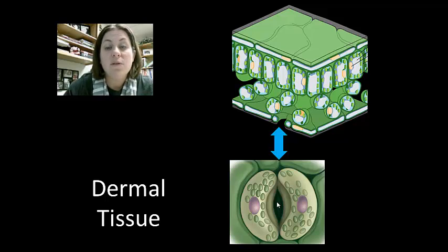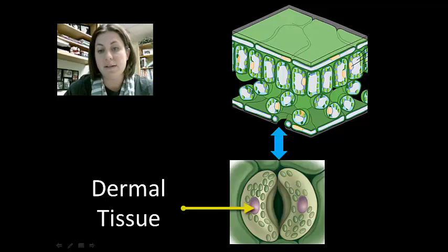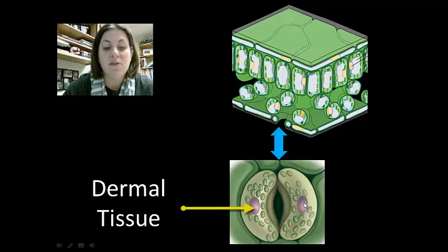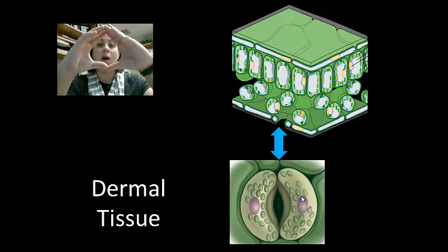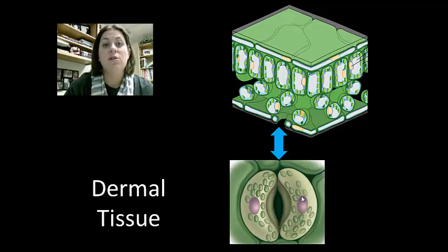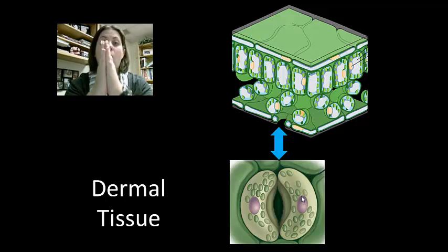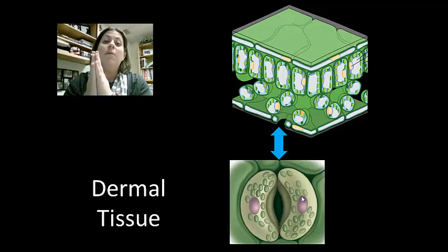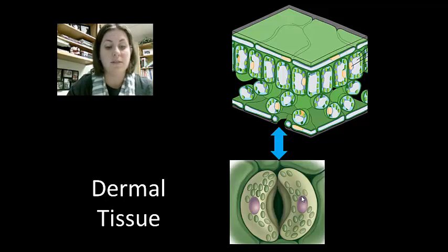We don't want the stomata to be open all the time. Modified dermal cells called guard cells line the stomata. When the plant has plenty of water and needs carbon dioxide, the guard cells are open. However, if the plant is losing too much water, the guard cells close the hole, stopping water loss. The plant must balance these two to prevent water loss versus doing photosynthesis.